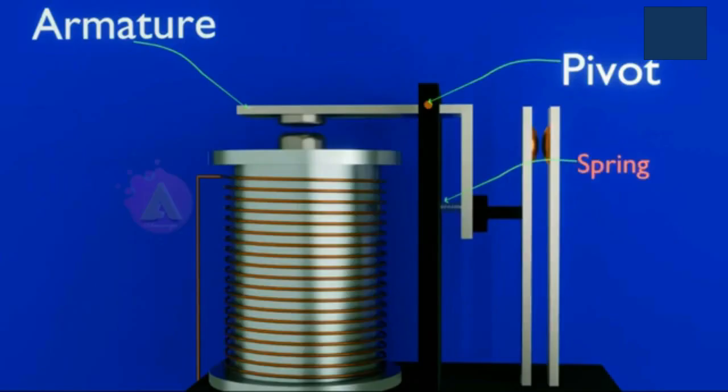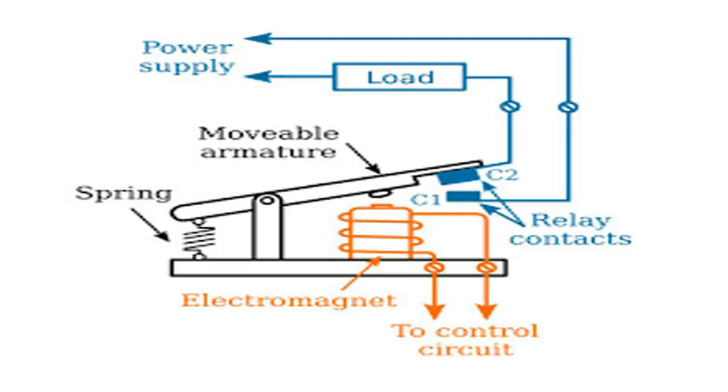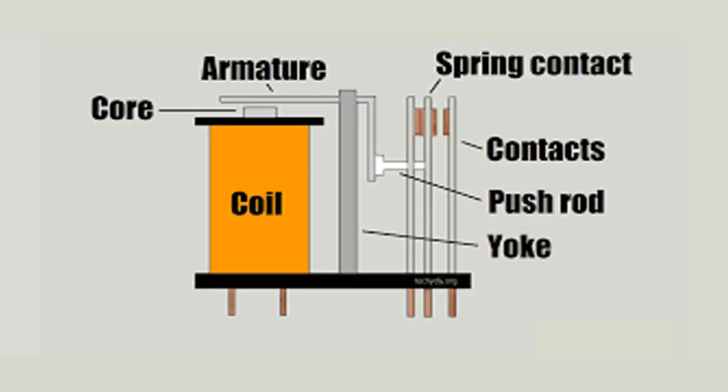When the control signal is turned off, the magnetic field collapses. A spring then forces the armature back to its original position, returning the contacts to their default state, either opening the closed contact or closing the open contact. Relays are used for isolation and controlling high-power loads with low-power signals.